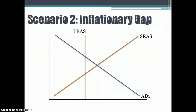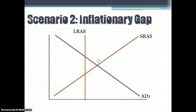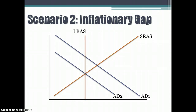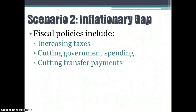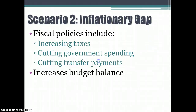The flip side is also true. If you're in an inflationary gap where output is greater than potential output, then fiscal policy would shift aggregate demand to the left in order to get back to long-run equilibrium. You can do that by increasing taxes, cutting spending, or cutting transfer payments. If you increase taxes and cut spending, you are generally going to move your budget balance towards a surplus, towards a more positive number.